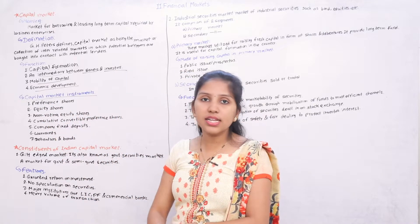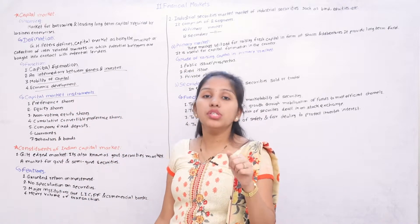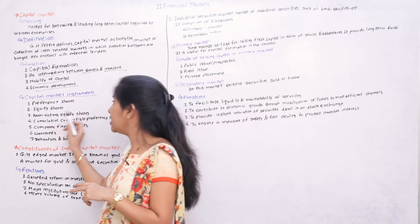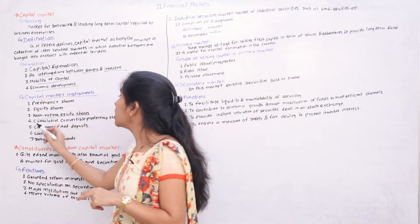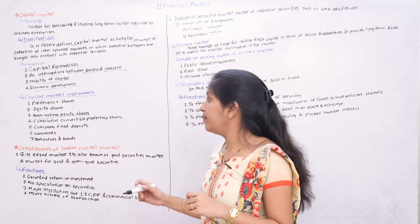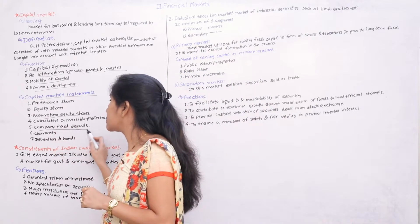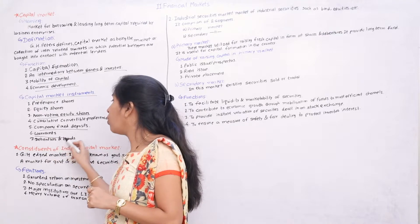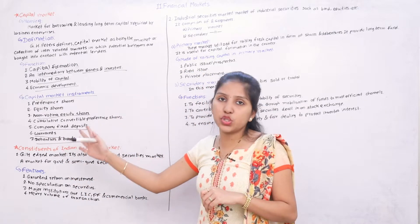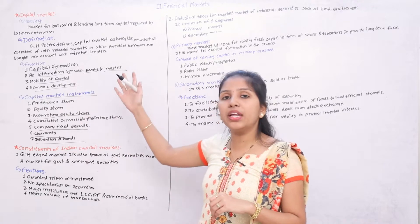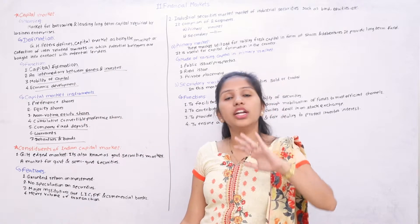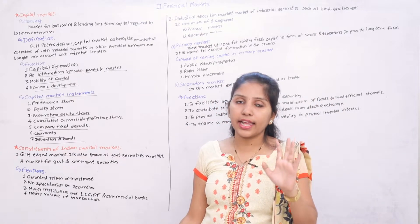Now the instruments of capital market: firstly preference shares, equity shares, non-voting equity shares, cumulative convertible preference shares, company fixed deposits, warrants, debentures, and bonds. These are the instruments of the capital market.